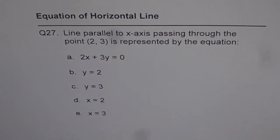Now let's figure out how to write equation of a horizontal line. Question number 27. Line parallel to x-axis passing through the point (2, 3) is represented by the equation and we have a couple of choices.